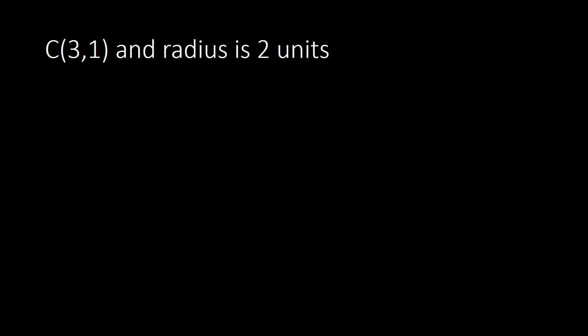In this first example, the center coordinate is at (3, 1) and the radius is 2 units. Given the center and radius, you simply plug those values into the standard form of the equation of a circle: (x − h)² + (y − k)² = r². Your center coordinates correspond to h and k.